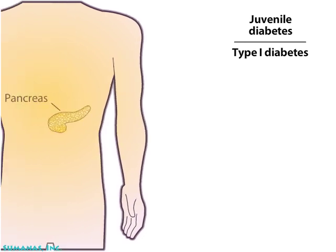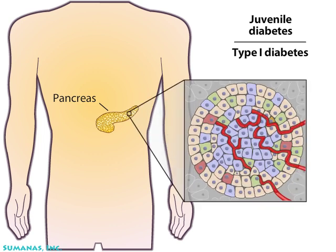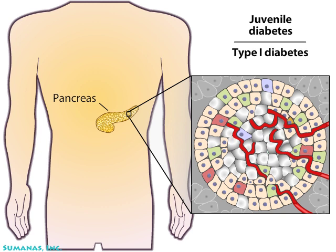In type 1 diabetes, the immune system destroys beta cells. Without insulin, cells cannot take in glucose from the bloodstream, and blood glucose levels remain high. Type 1 diabetes is currently treated with a daily regimen of blood testing and insulin injections.